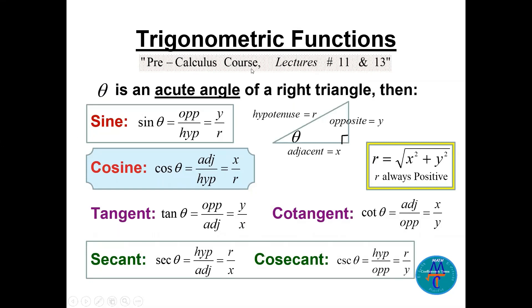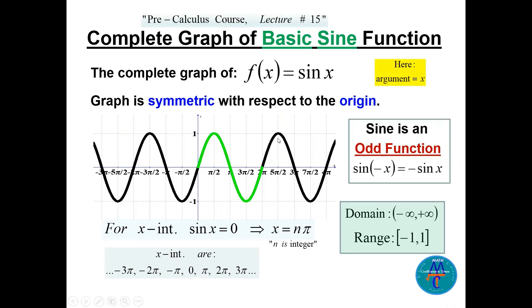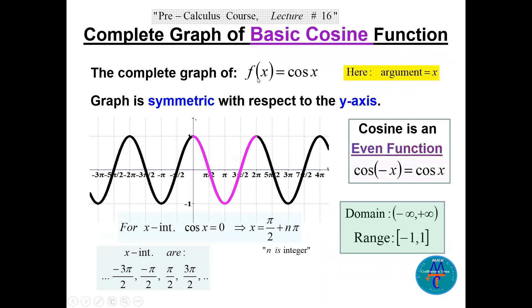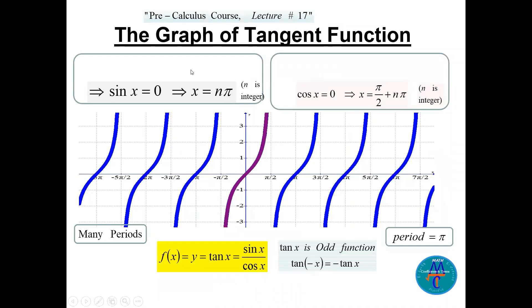Trigonometric functions we use them a lot also. We have seen in pre-calculus course lectures 11 and 13. The sine of theta is y/r, the cosine of theta is x/r, tangent and cotangent, secant and cosecant. Remember r is equal to the square root of x² + y². Now the graph of the sine function we have seen in pre-calculus course lecture number 15. We will use them in this course also, all these graphs. The graph of the cosine it was mentioned in lecture 16 of the pre-calculus course and the graph of the tangent it was mentioned in lecture 17. Remember that. So this is the x-intercept of the tangent and this is the vertical asymptotes of the tangent where the cosine is zero.